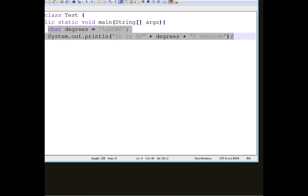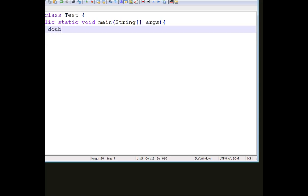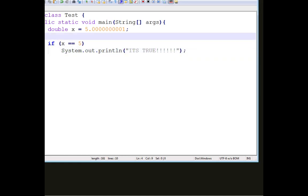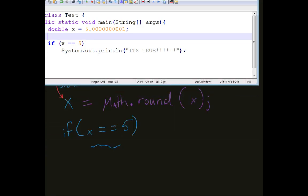So I said I had a double x equals 5.0000, a bunch of zeros. And I want to do an if statement, if equal 5, system dot out dot print line, it's true. Oh my goodness. So again, how did I tackle this?